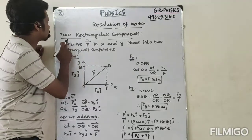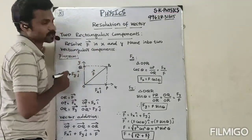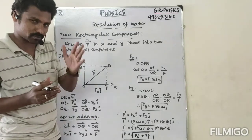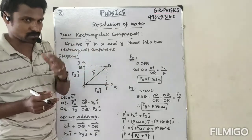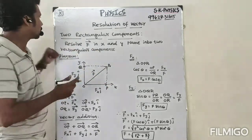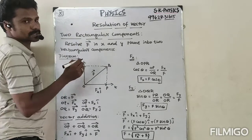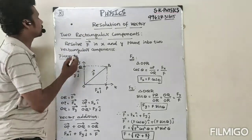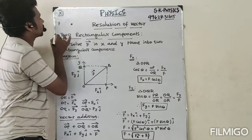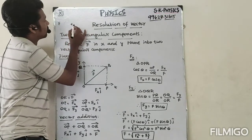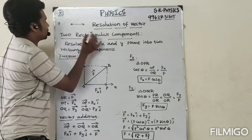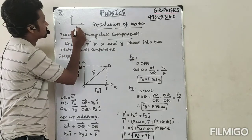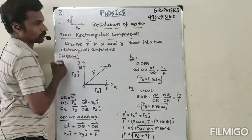We are going to discuss two rectangular components. Here the x-axis and y-axis will come. Suppose we take force as an example. The net force is F. This force is split into two components — one along the x-axis and another along the y-axis. So this force is split as Fx and Fy.